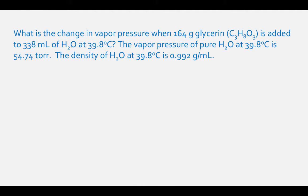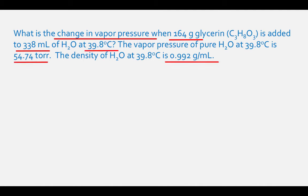What is the change in vapor pressure when 164 grams of glycerin, C3H8O3, is added to 338 milliliters of H2O at 39.8 degrees Celsius? The vapor pressure of pure H2O at 39.8 degrees Celsius is 54.74 torr. The density of H2O at 39.8 degrees Celsius is 0.992 grams per milliliter. They give us a mass of the solute and the volume of the solvent, the temperature, the vapor pressure of the pure solvent, and the density of the solvent.